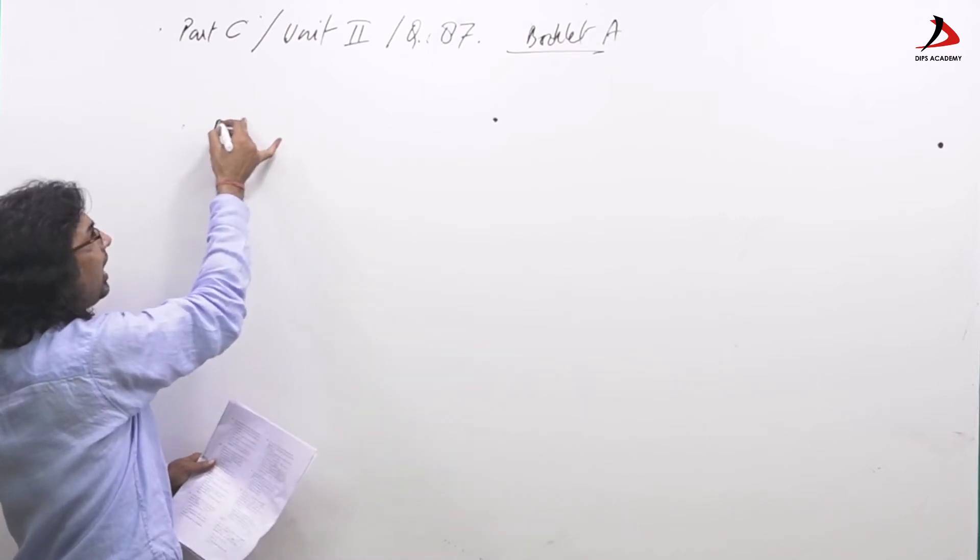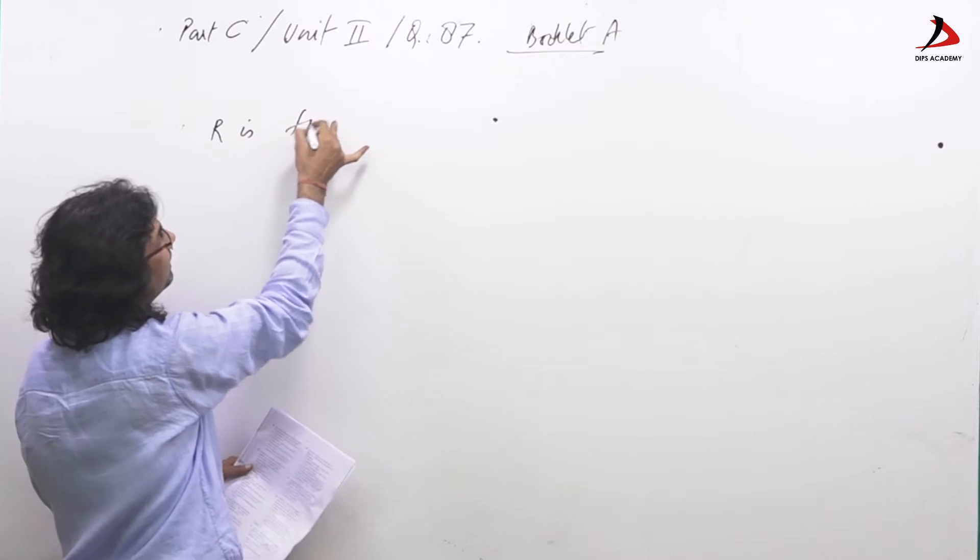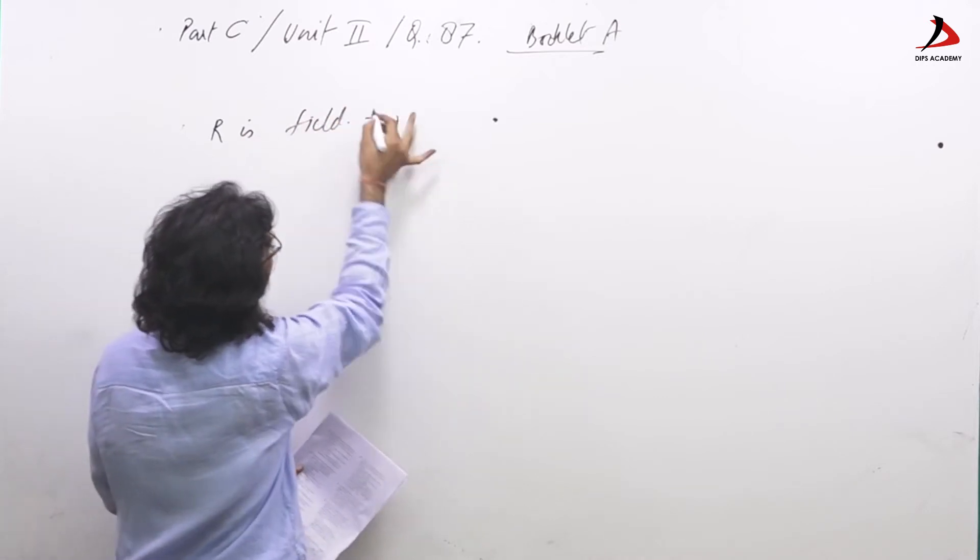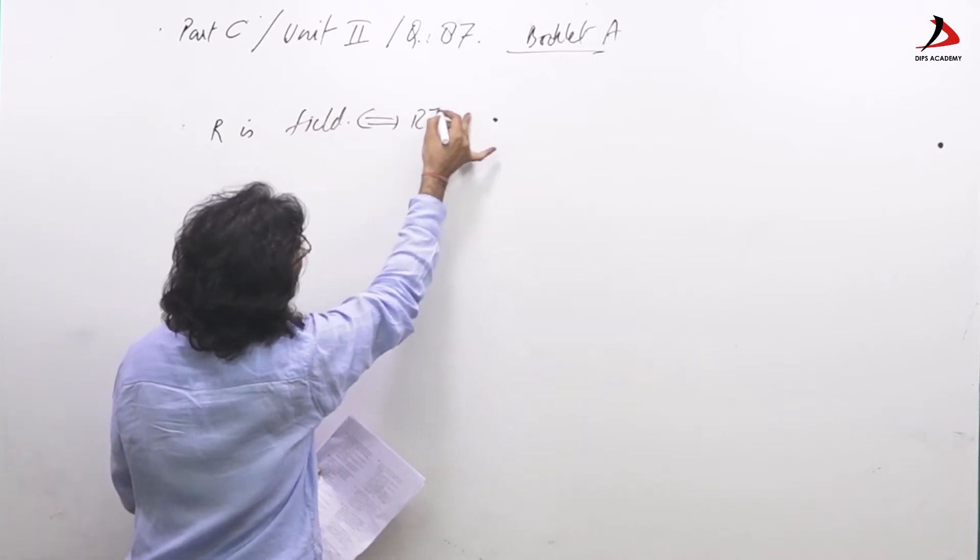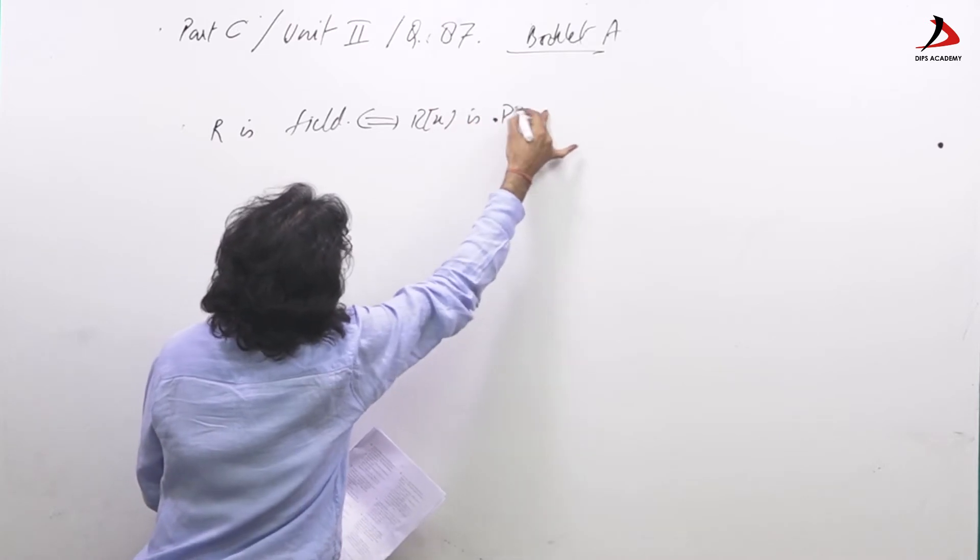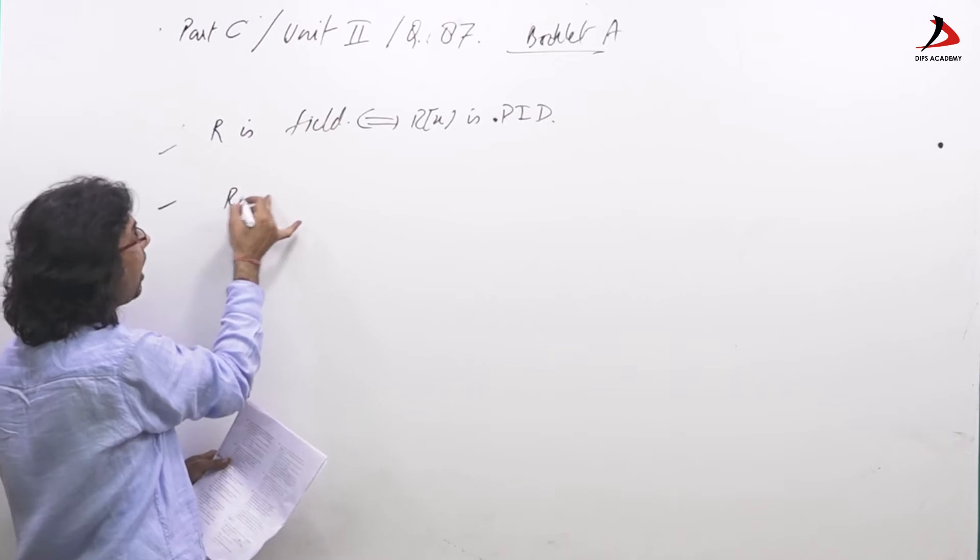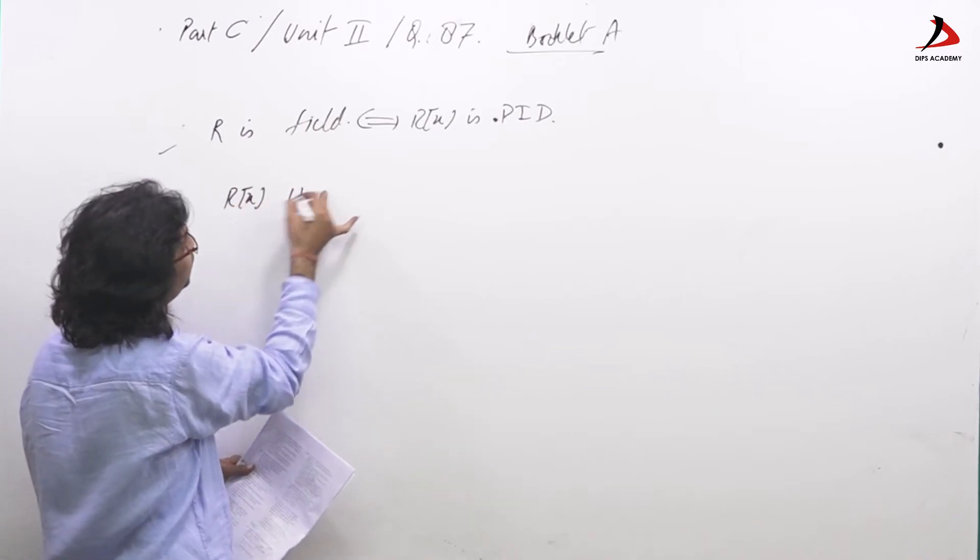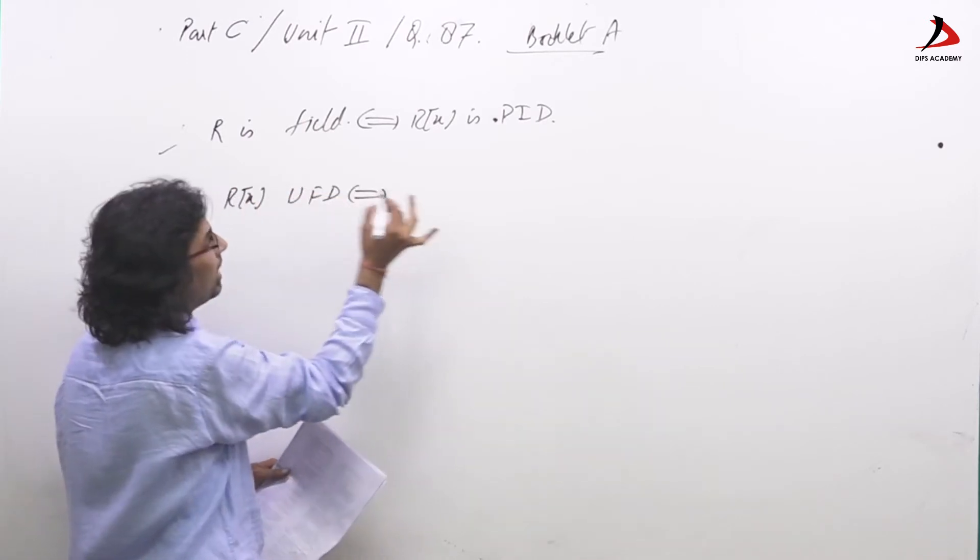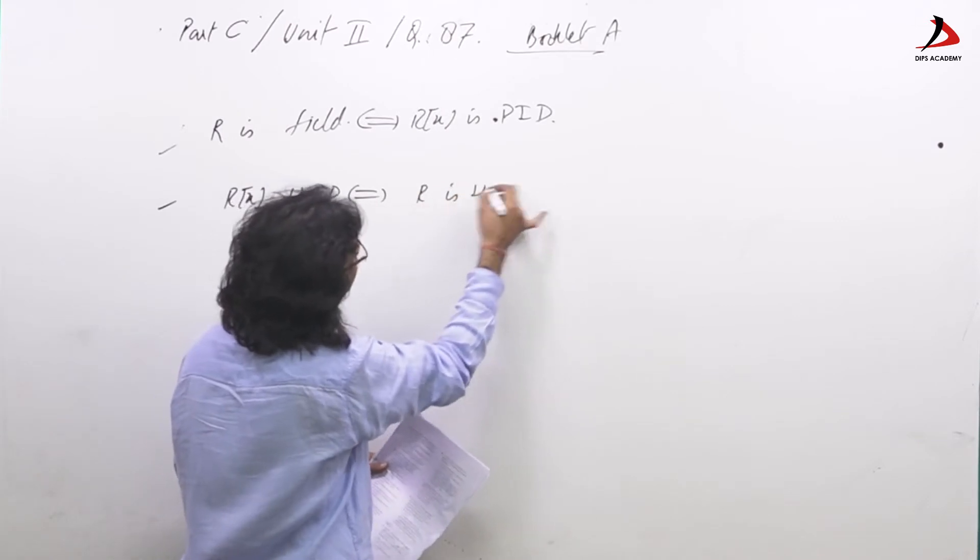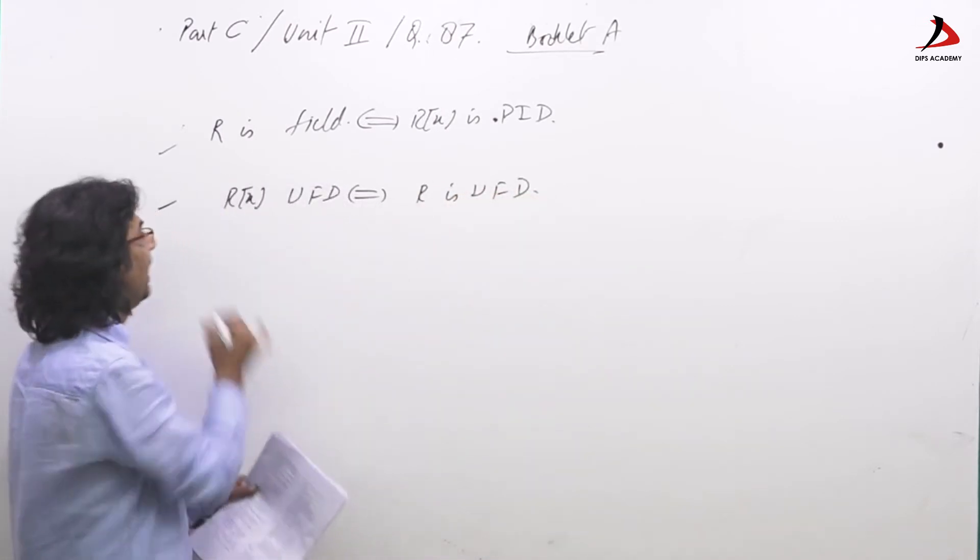If R is field implies Rx is PID, one result. Two, Rx is UFD implies R is UFD.